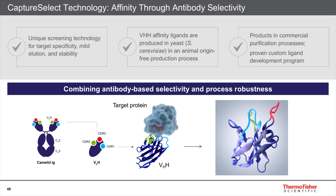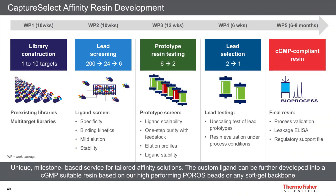The CaptureSelect technology utilizes the unique heavy chain-only antibodies of camelids. The advantage of antibodies without light chains is their simplicity and improved stability while selectivity is maintained. The best ligand candidate — the variable region of these camelid IgGs — is selected by a high-throughput screening-based method. The sequence is then expressed in yeast, and the final production process is free of animal-originated components. We have been using this workflow for more than 15 years for both internal projects and custom resin development.